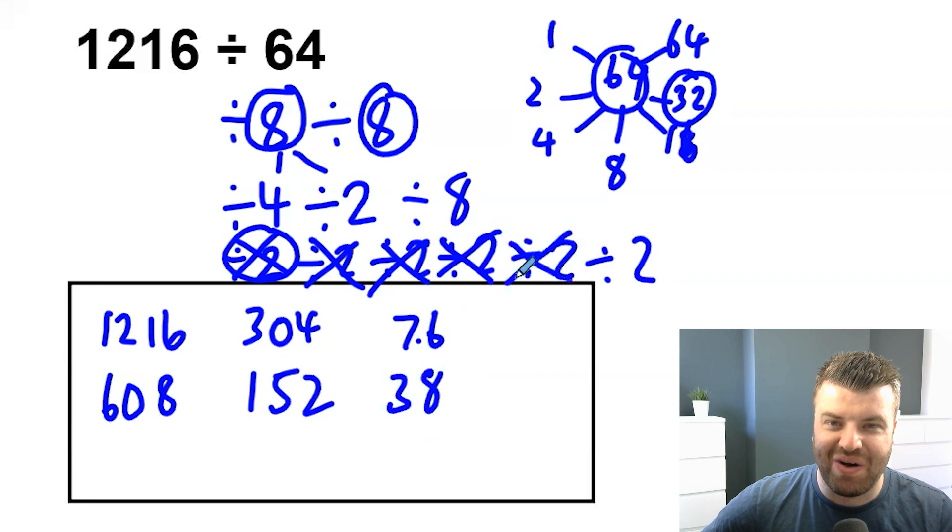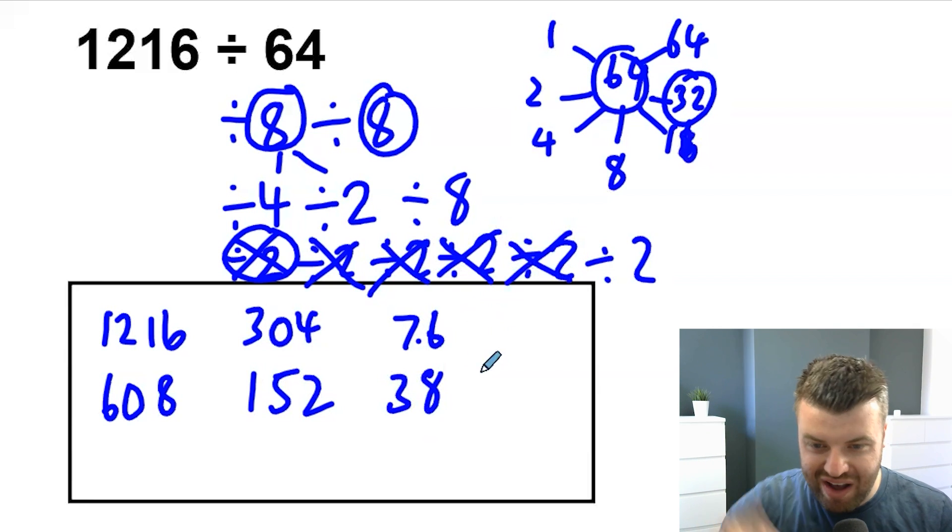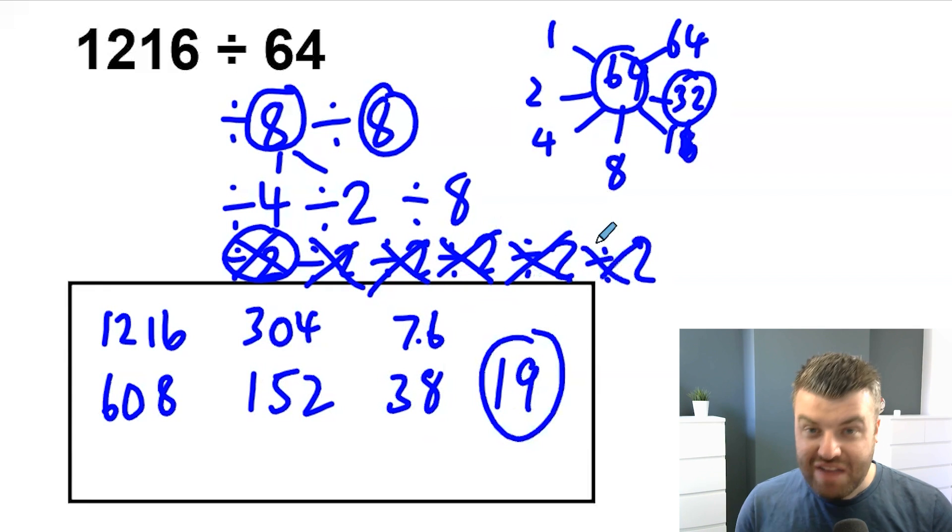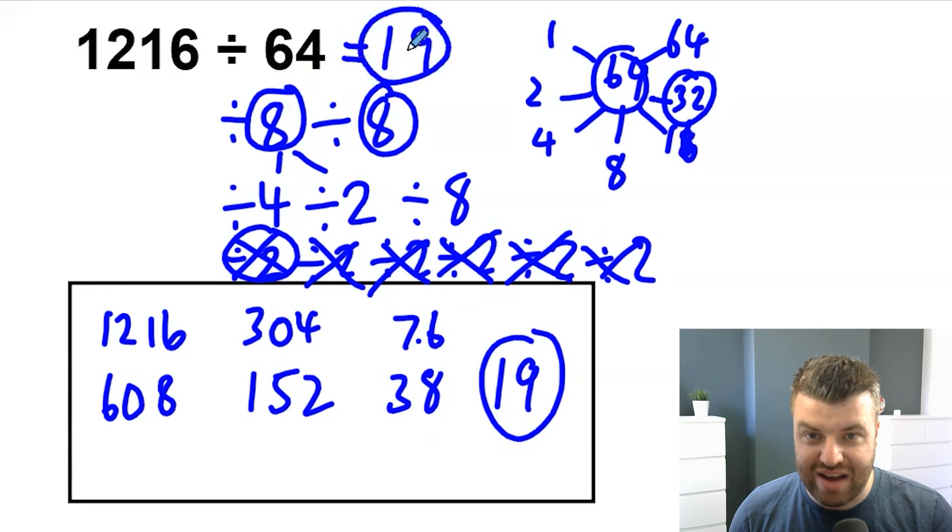Divide that by 2 again. We're going to have 38. Cross it off. And we're going to do one more halving. 38 divided by 2 is 19. We've done that mentally. We have answered 1,216 divided by 64 is equal to 19. And we did it in our heads.